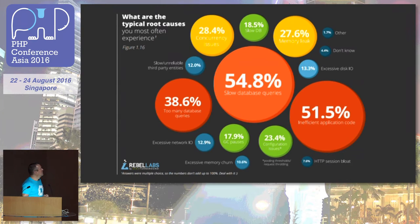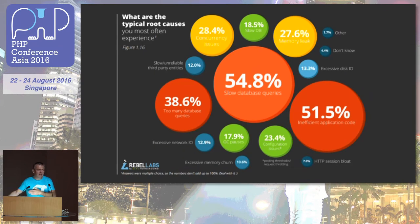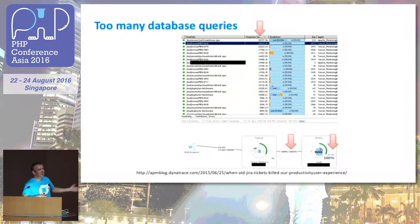In detail — and this is feedback we get from a lot of developers — it's slow database queries, not necessarily because of missing indexes, but really the design of the query itself; inefficient application code; and too many database queries. Too many database queries, like the example we just had — that's what I want to talk about in the next couple of minutes.